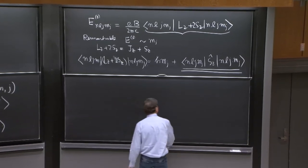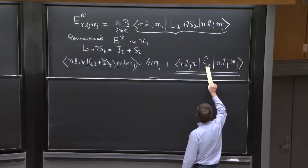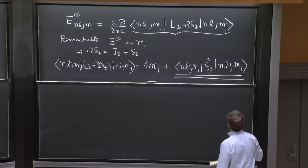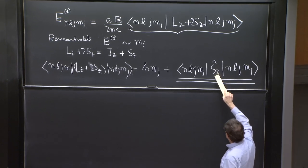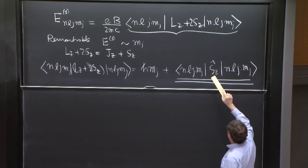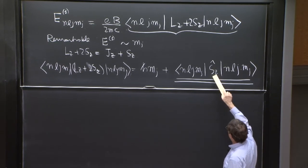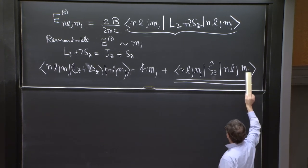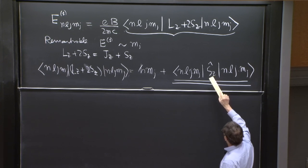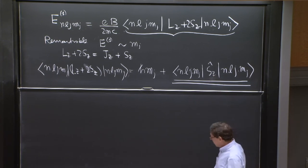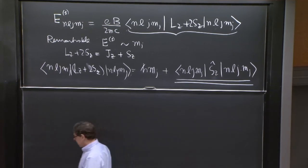This operator, Sz, the one line summary is that this operator is a vector operator under angular momentum, under the total angular momentum. And as such, its matrix elements will behave like the matrix elements of Jz.